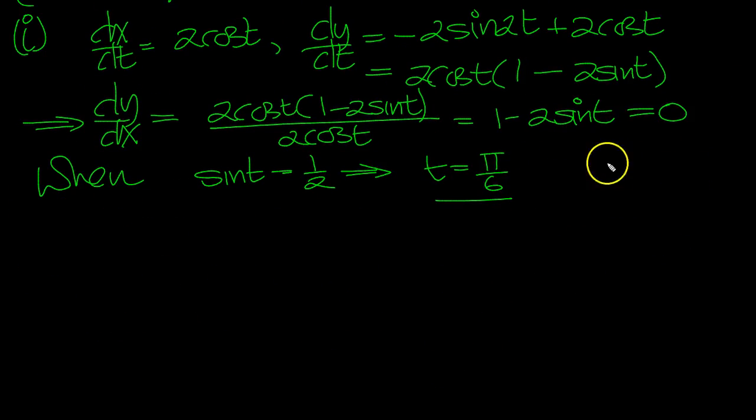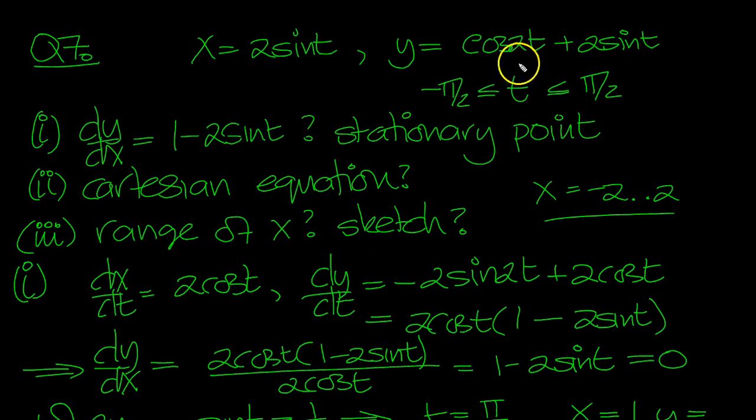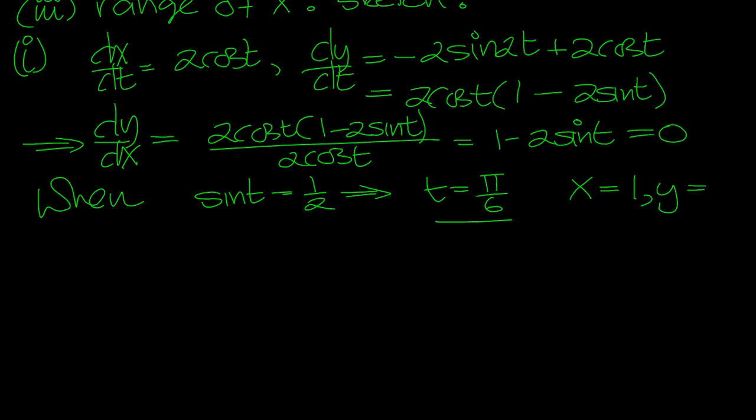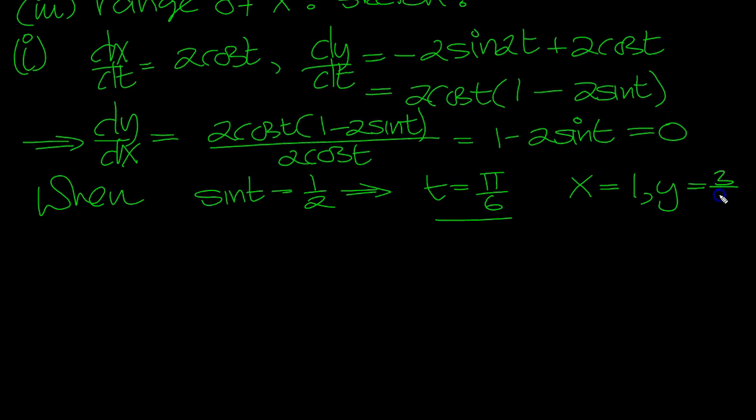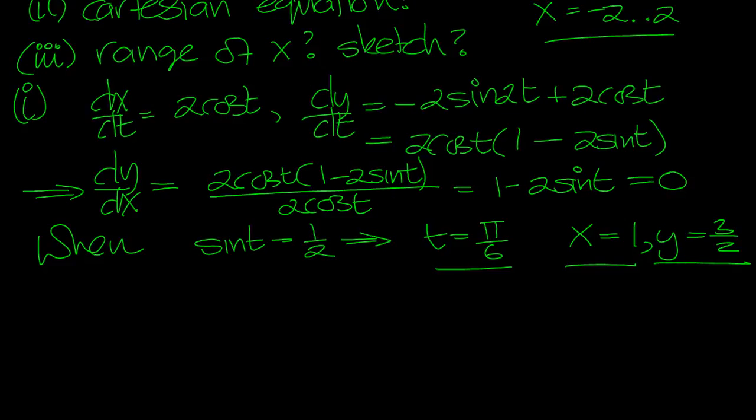So, x equals 2 sine t, which is 2 times 1/2 equals 1, and y is equal to... t is 30 degrees, so it's cos 60, which is a half, plus 2 times 1/2 times 1/2 equals 1, so it's 3/2, isn't it. So, we can just put that down. Okay, that was part 1.